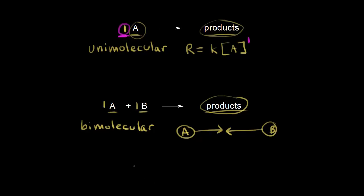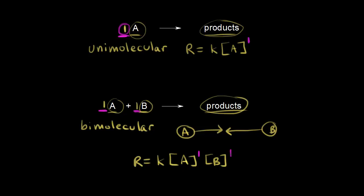When we write the rate law for this bimolecular reaction, the rate is equal to the rate constant K times the concentration of A. Since this is an elementary one-step reaction, we take the coefficient and turn it into the exponent — so times the concentration of A to the first power, times the concentration of B to the first power.